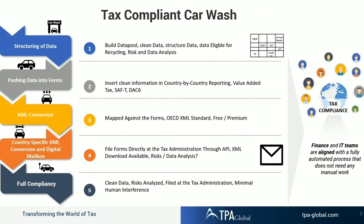Different authorities have different formats for accepting data — most use XML or JSON, with XML being most common. The data that is ready in a human-readable UI needs to be converted into XML, which then goes to the government authorities. The highest risk happens in the first two steps only. Once converted to XML, the risk is reduced considerably because there is no further manipulation or loss of data possible from a reporting or filing perspective.